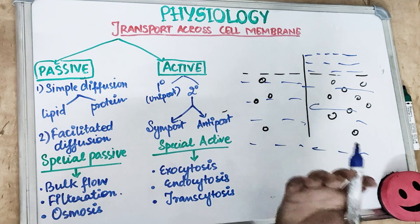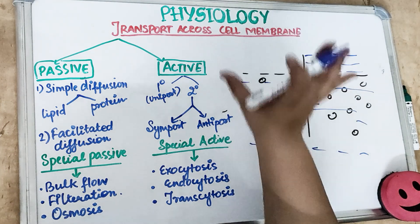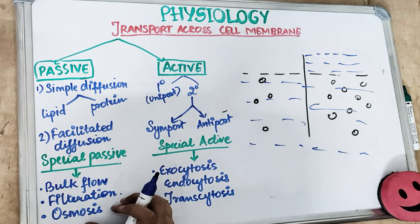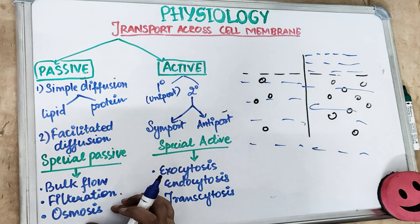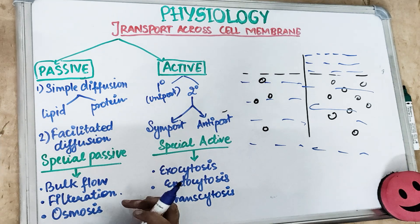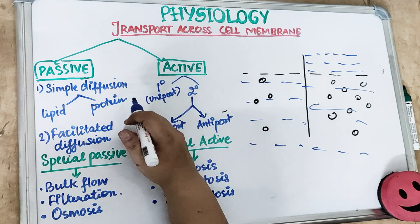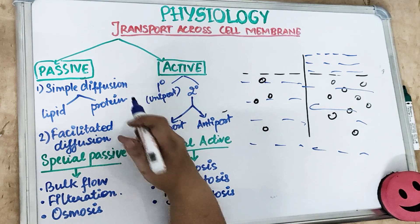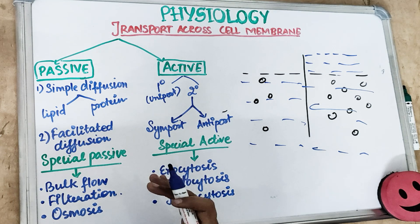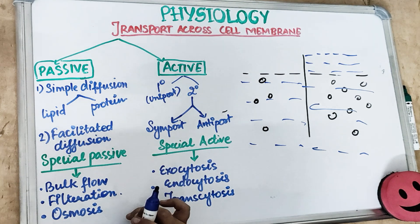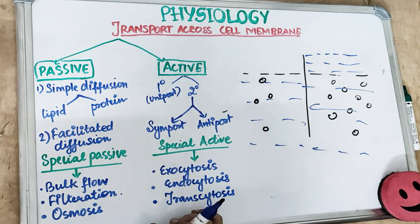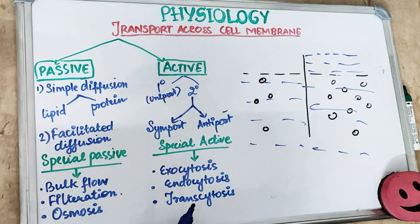In the next video we'll cover active transport. We have studied passive transport including simple diffusion, facilitated diffusion through carrier proteins, and the special types: bulk flow, filtration, and osmosis. If you have any questions about transport across the cell membrane leave them in the comments below, give a thumbs up if you liked it, subscribe if you haven't, and I'll see you next time. Stay safe.